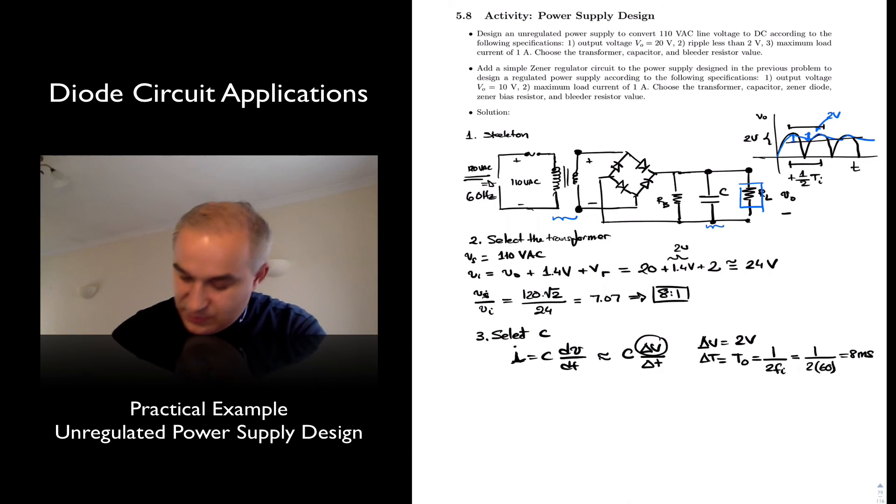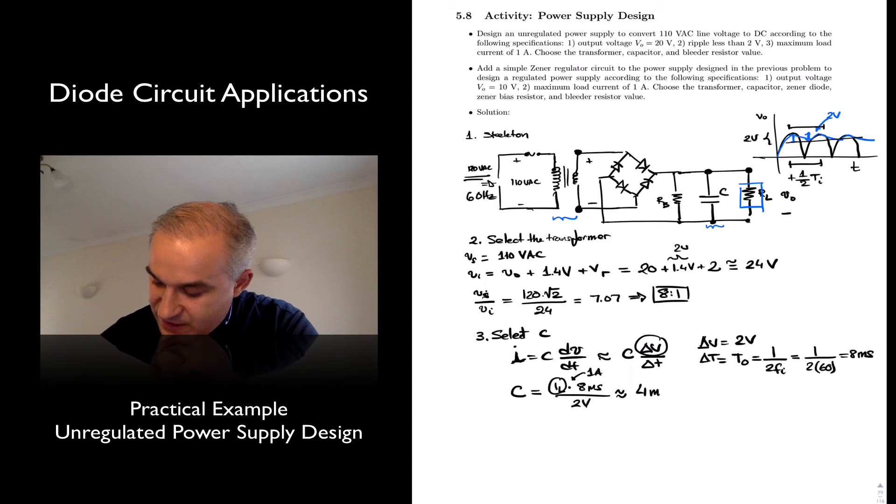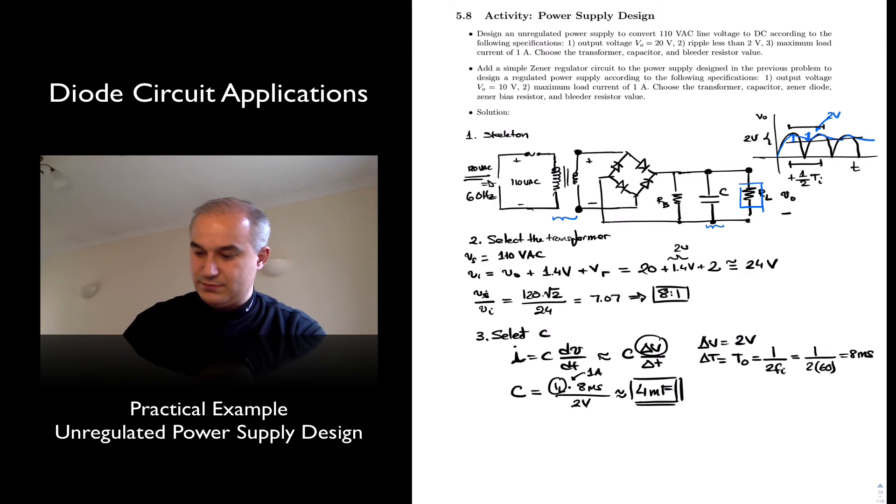So with this, we are able to, for a particular load, C is equal to my load current I load times the 8 milliseconds, divided by 2 volts. The load current in this case we want 1 amp, so this is going to be approximately equal to 4 millifarads, which you could add a couple of capacitors in parallel.